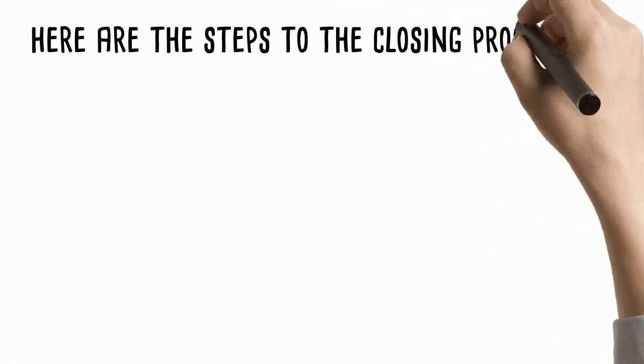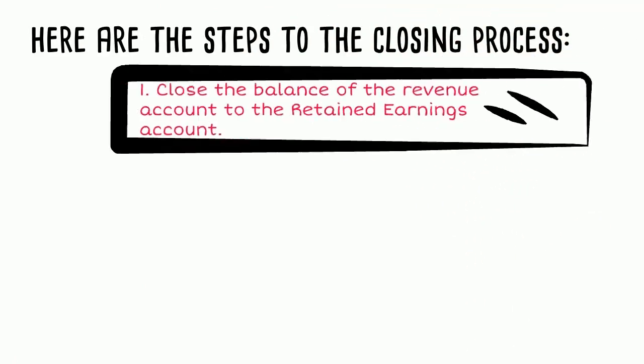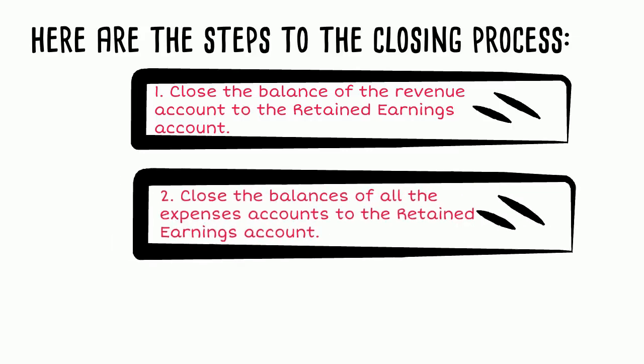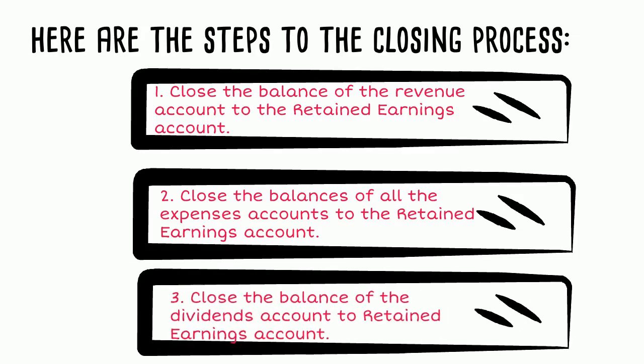Here are the steps to the closing process. First, we must close the balance of the revenue account to the retained earnings account. Remember, revenue's normal balance is a credit, so if we want to zero it out, we will need to debit revenue. Second, close the balances of all the expense accounts to the retained earnings account. The normal balance of expenses are debits, so to clear those accounts out, we must credit the expenses. And third, close the balance of the dividends account to the retained earnings account. Dividends' normal balance is a debit, so to clear it out, we must credit dividends.